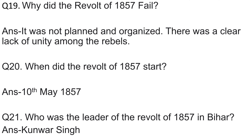Question number 19: Why did the revolt of 1857 fail? Answer is it was not planned and organized, and there was a clear lack of unity among the rebels. Question number 20: When did the revolt of 1857 start? Answer is 10th May 1857.